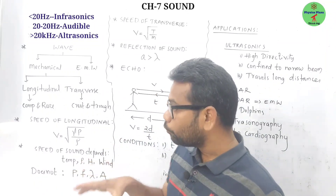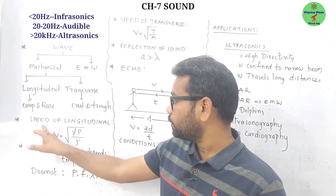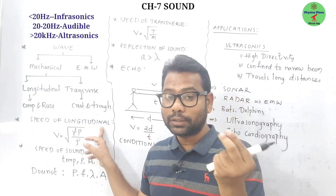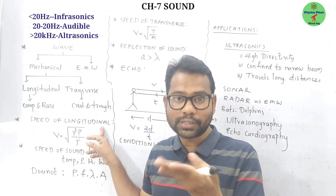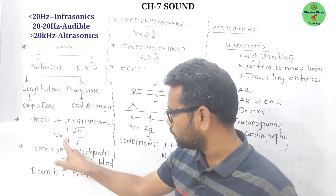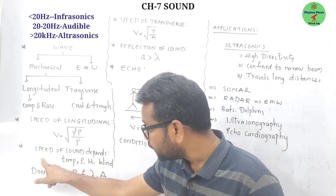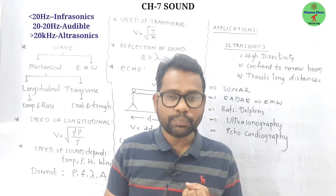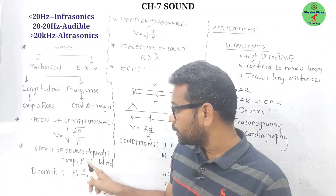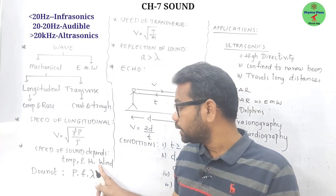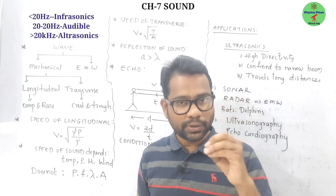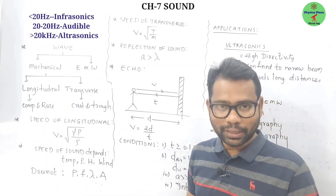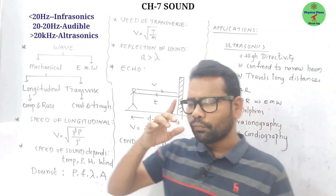To calculate the speed of a longitudinal wave — for example, a sound wave in air — the formula is v = √(γP/ρ). The speed of sound depends on temperature, density of the medium, humidity, and direction of wind. Speed of sound does not depend on pressure, frequency, wavelength, or amplitude.